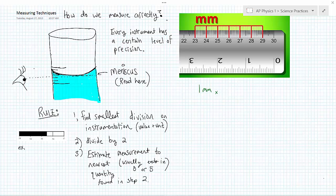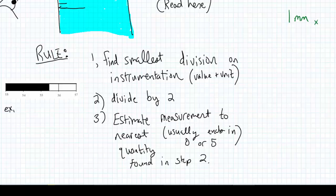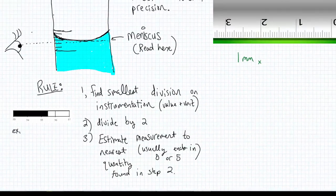I'm going to show you in three steps how to find an instrument's level of precision. So the first step is we need to find the smallest division on the instrumentation, the value and the unit.